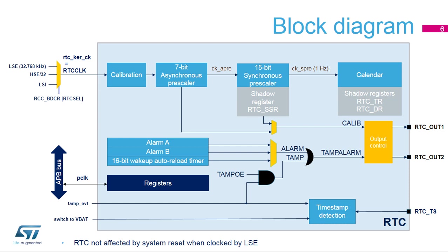Then a 15-bit programmable synchronous pre-scaler provides the CKS pre-clock. The CKS pre-clock must be 1 Hz in order to update the time and date BCD registers in 1-second increments. The sub-second register resolution is defined by the CKA pre-frequency. By default, it is 256 Hz when the RTC clock frequency is 32,768 Hz. The SSR register resolution is increased by reducing the asynchronous pre-scaler value.